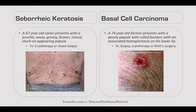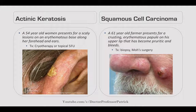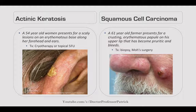Moving into skin cancers: basal cell carcinoma — a 74-year-old farmer presents with a pearly papule with rolled borders and telangiectasias on the lower lip. Treat with biopsy and cryotherapy or Mohs surgery. Actinic keratosis — a 54-year-old woman has a scaly lesion on an erythematous base along her forehead and ears. Treat with cryotherapy or topical 5-FU. These are precursors to squamous cell carcinomas. A 61-year-old farmer has a crusting erythematous papule on his upper lip that bleeds. Treat with biopsy, surgical removal, or Mohs surgery.